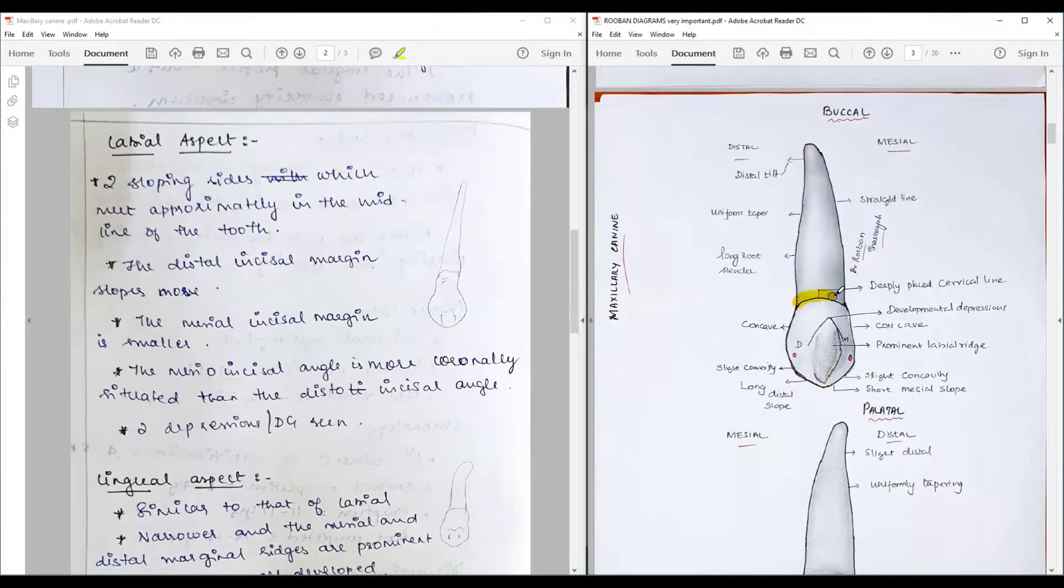We have a deeply placed cervical line with the convexity facing the root and concavity facing the crown. From the cervical line along the mesial outline, it first forms a slight concave surface till it reaches the contact area. Where is the contact area on the mesial side? The contact area is at the incisal third or junction of the incisal and middle third.